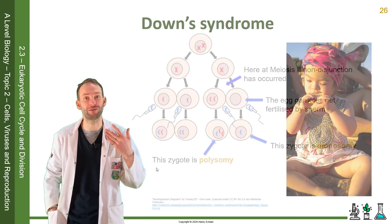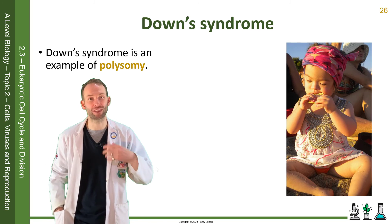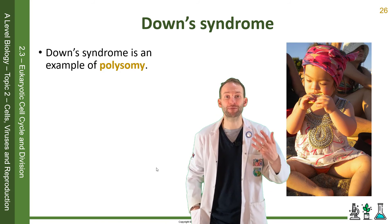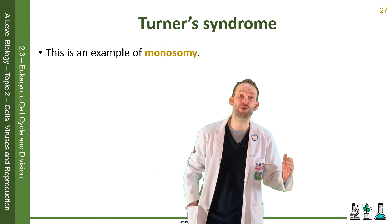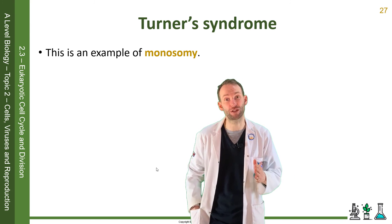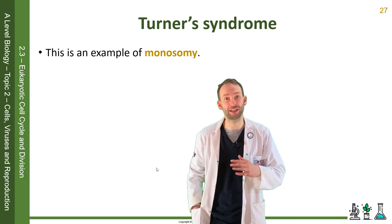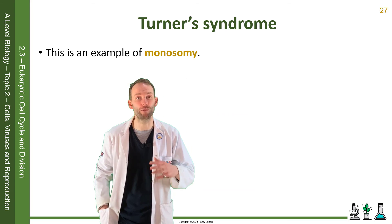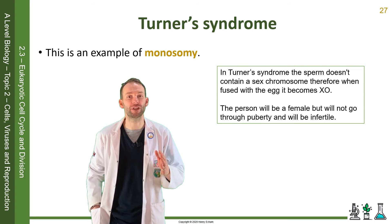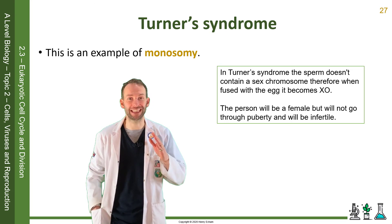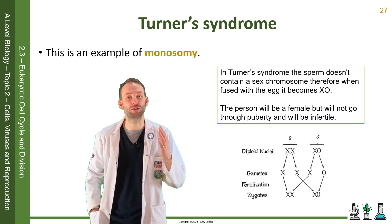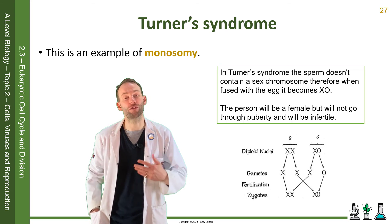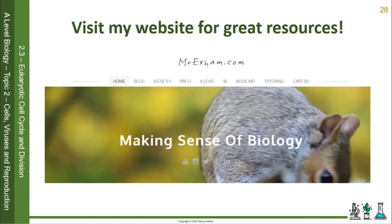Down syndrome is an example of polysomy, where you end up with three copies of chromosome 21, which affects mental and physical development. Life expectancy is reduced, but most people live to middle age. Turner syndrome is an example of monosomy, and this affects the sex chromosomes. Normally you have X and Y if you're a boy, and X and X if you're a girl. But in Turner syndrome, the sperm doesn't pass anything on at all, and therefore it's only determined by the X chromosome from the mum. So the offspring is what we call XO — they will be female, but they will not go through puberty and they will be infertile.